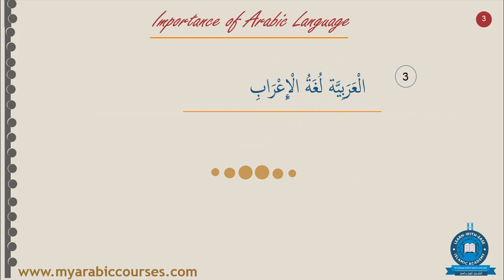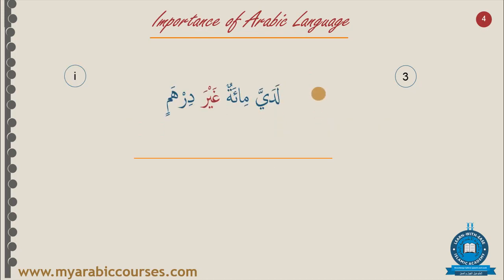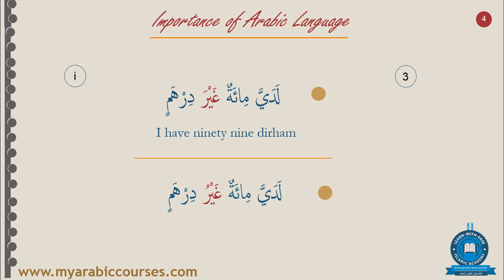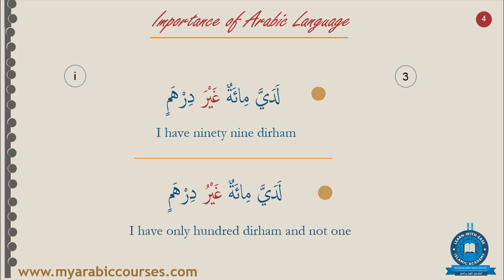Arabic language (Al Arabija) is a language of cases and grammatical analysis. We cannot see this level of case analysis in any other language. For example, you say لدي مئة غيرَ درهم — the غير with a فتحة means 'I have 99 dirhams.' But if you turn the فتحة to a ضمة, لدي مئة غيرُ درهم, it means 'I have only 100 dirhams and not 1 dirham.'